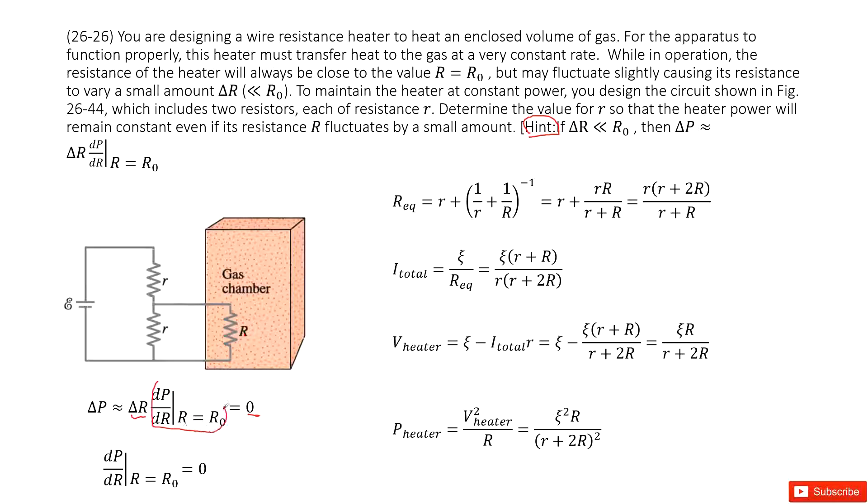So the term can equal to zero is this part. dP/dR when R equals R₀ equals zero. So that means in this situation, what is the r equal? So we need to determine the small r that satisfies this requirement.